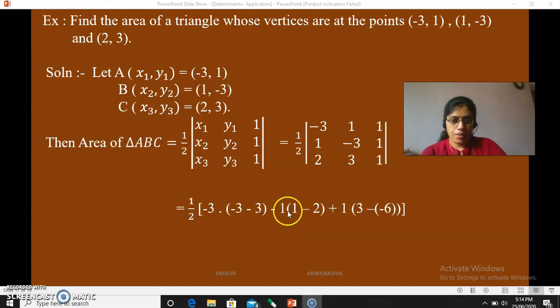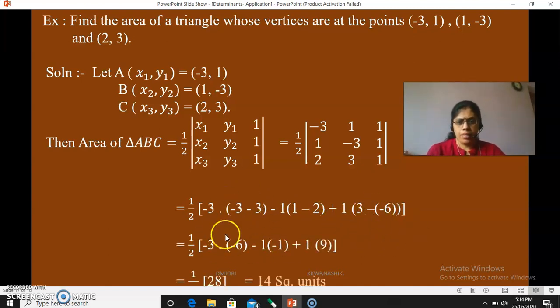Expand these brackets. This is -6, this is -1, this is 9. See, the bracket is -6, -1 and 9. Simplified. This is 18 plus 18 it will be plus 1, plus 18 plus 1 is plus 19. 19 plus 9 is 28. And 28 upon 2, it is 14 square units.